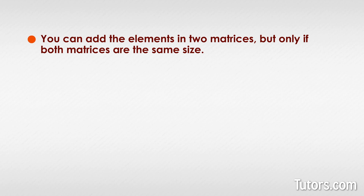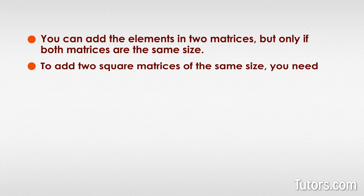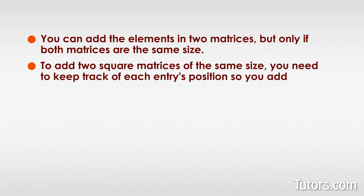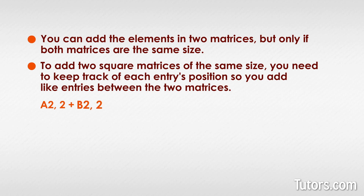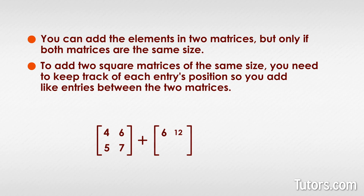You can add the elements in two matrices, but only if both matrices are the same size. Even if they are both square matrices, you cannot add them if one is 2 by 2 and the other is 5 by 5. To add two square matrices of the same size, you need to keep track of each entry's position, so you add like entries between the two matrices — you add a_22 plus b_22, you add a_32 plus b_32, and so on.